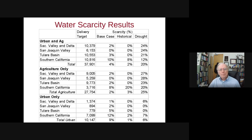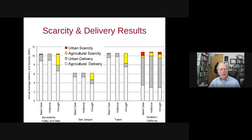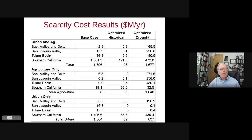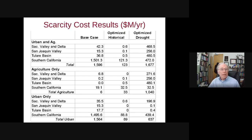In monetary terms, running through the economic value functions, you end up with basically half a billion dollars a year in water scarcity costs in the Sacramento Valley, a little bit less in the San Joaquin Valley, half a billion in the Tulare Basin, and half a billion in Southern California. So it costs the state a couple of billion dollars a year if you manage this paleo-drought well. And this is an optimized model, so maybe this is optimistic, but it's probably in that order of magnitude.